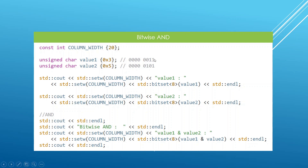We're going to take the bit at position 0 in value1 and AND it with the bit at position 0 in value2, then take 1 and 0, 0 and 1, 0 and 0, and AND these up. If we store the result, we get a 1 because 1 AND 1 is 1, and 0s for the other positions. If we print this out, we're going to see this on the terminal.